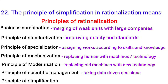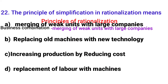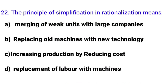Seventh: principle of simplification — reducing unnecessary varieties of products and focusing on essential ones to increase production. So the answer to the MCQ about simplification principle is: increasing production by reducing the variety of products.